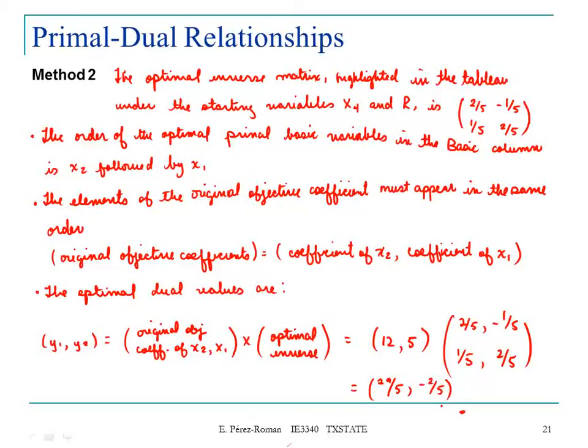From the primal solution, optimal solution, you can find your optimal dual variables by using one of these two methods.